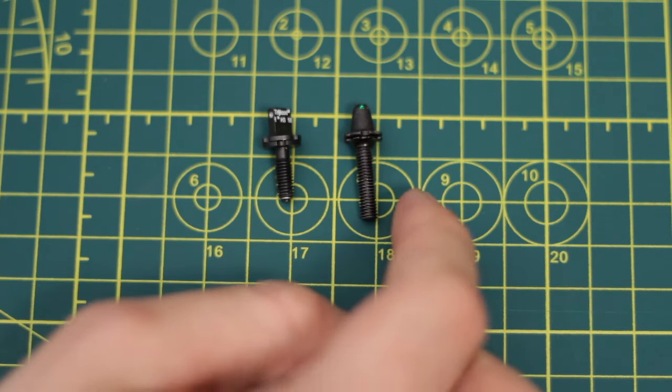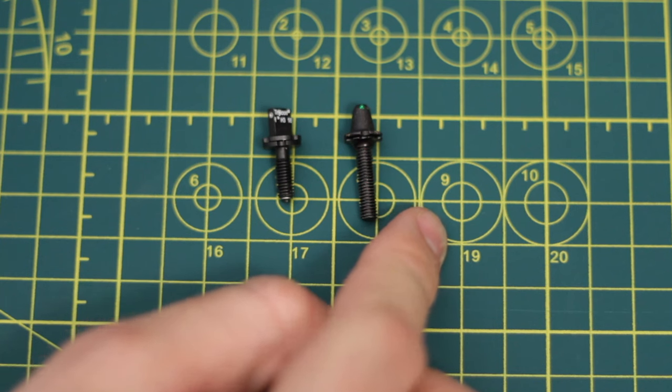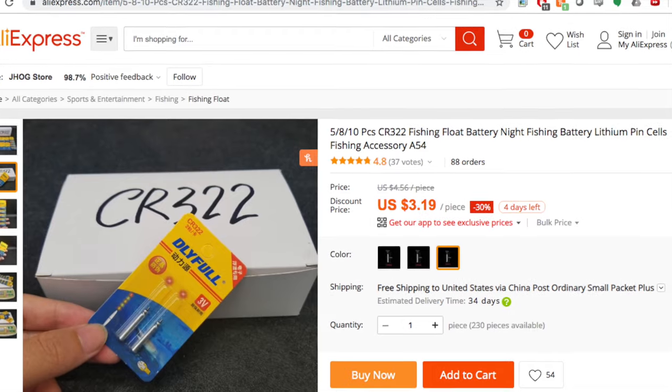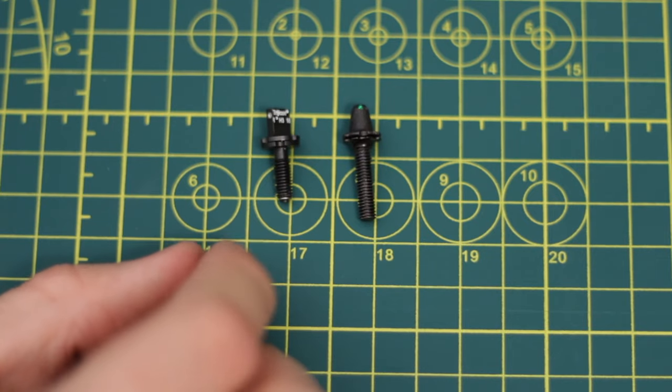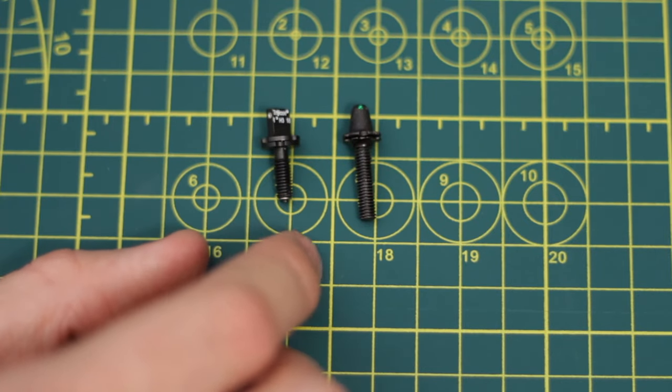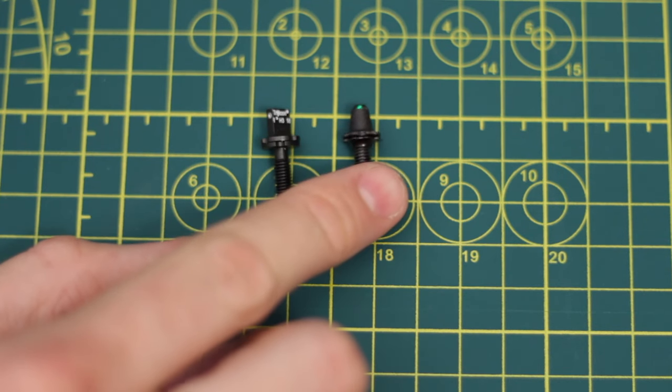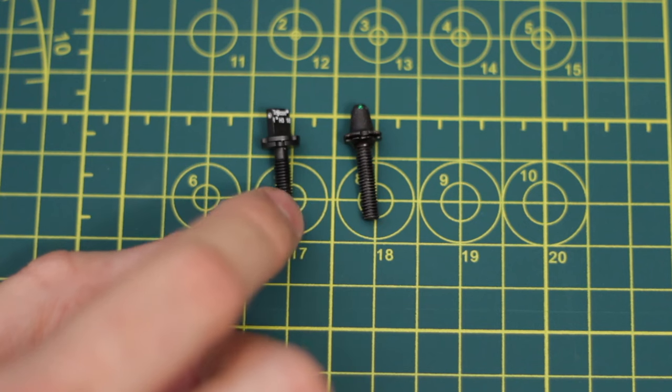You can find these CR322 batteries online for as cheap as $3.19 for a 10-pack. So basically for 20 years worth of batteries, you're spending less than four bucks. So the cost of ownership for these Voltaic sites is very low.